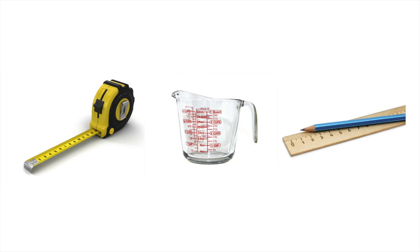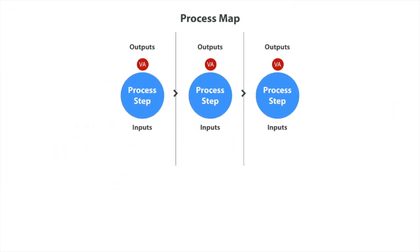Among your objectives in this phase is gathering data that will validate and quantify the problem. Out of the many tools available in the lean toolbox, the process map is the primary one that you will use. A process map illustrates the steps of the process, details the inputs and outputs of each step, and gives the team an opportunity to discover improvements.